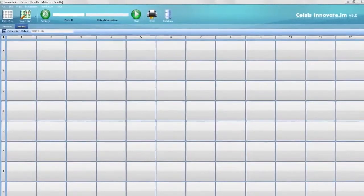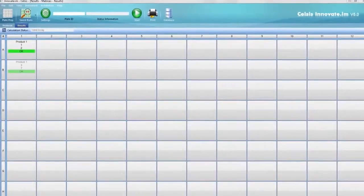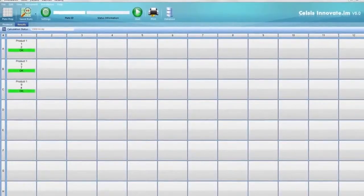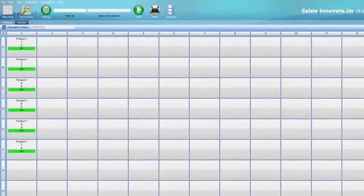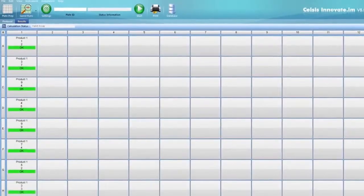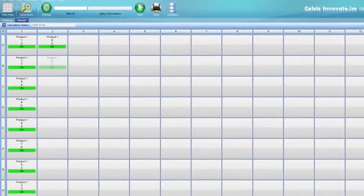The Innovate.im software controls the timed injection of reagents and measures the output in relative light units, or RLUs. Test results are displayed in real-time in a clear, easy-to-interpret grid that mirrors the plate setup.